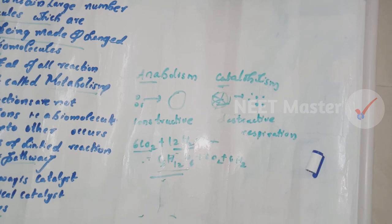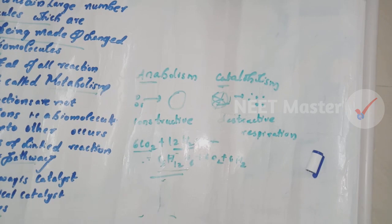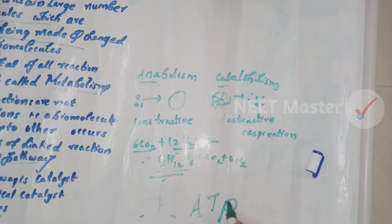An example of a catabolic pathway: glucose becomes lactic acid in skeletal muscle. The anabolic pathway requires energy — for example, assembly of protein from amino acids requires energy. On the other hand, the catabolic pathway releases energy — for example, breakdown of glucose into carbon dioxide and water releases energy. The most important form of energy in living systems is ATP — adenosine triphosphate.